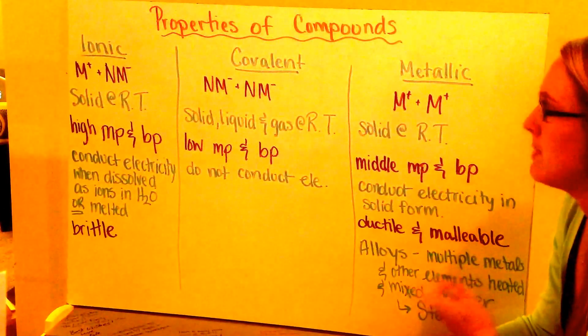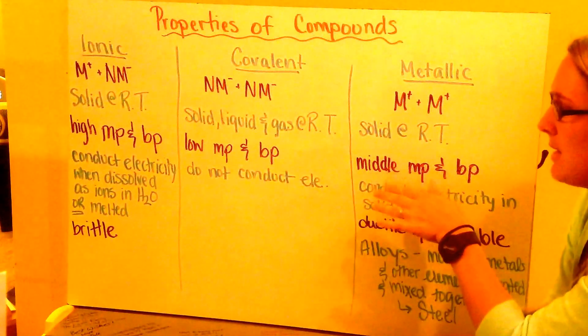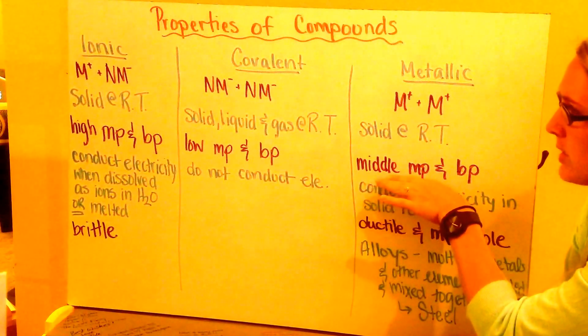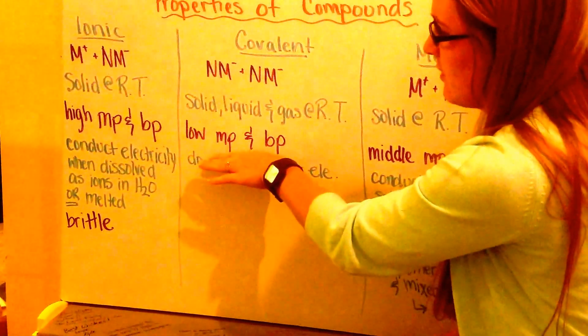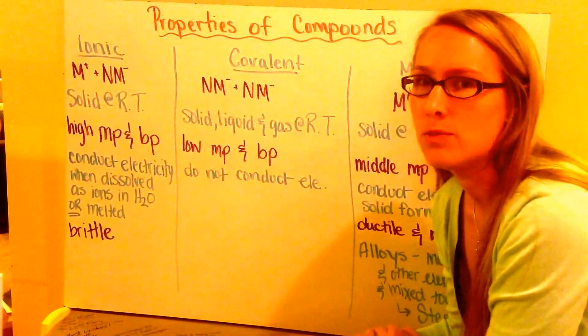We can mix two metals together and make things like steel, and this is at a middle of the range melting point and boiling point. Covalent compounds have our lowest melting point and boiling point, which makes sense because most of them are liquid and gases at room temperature.